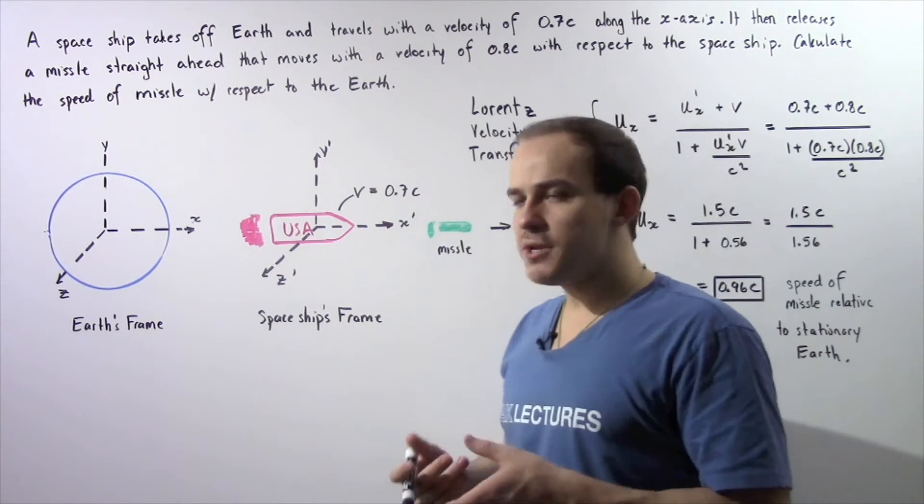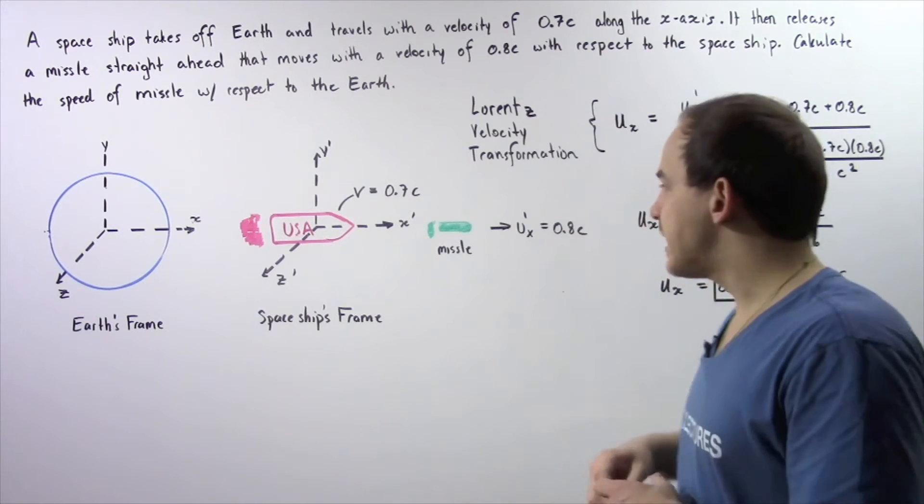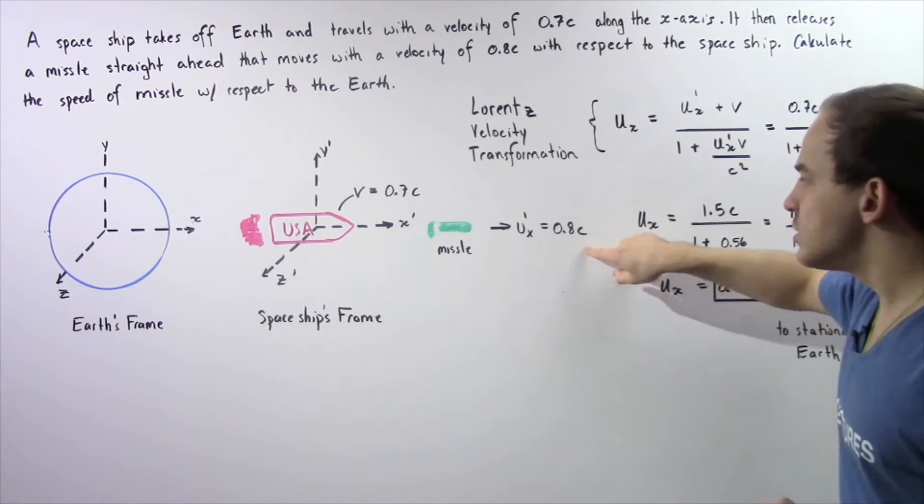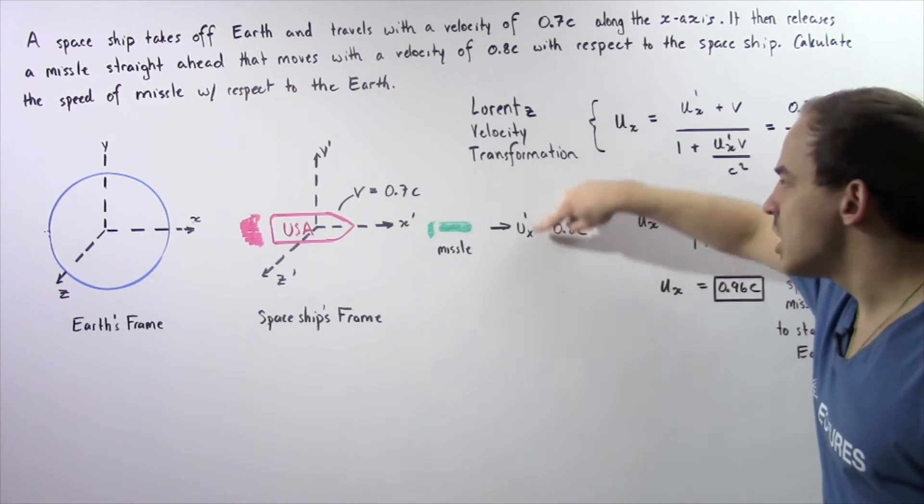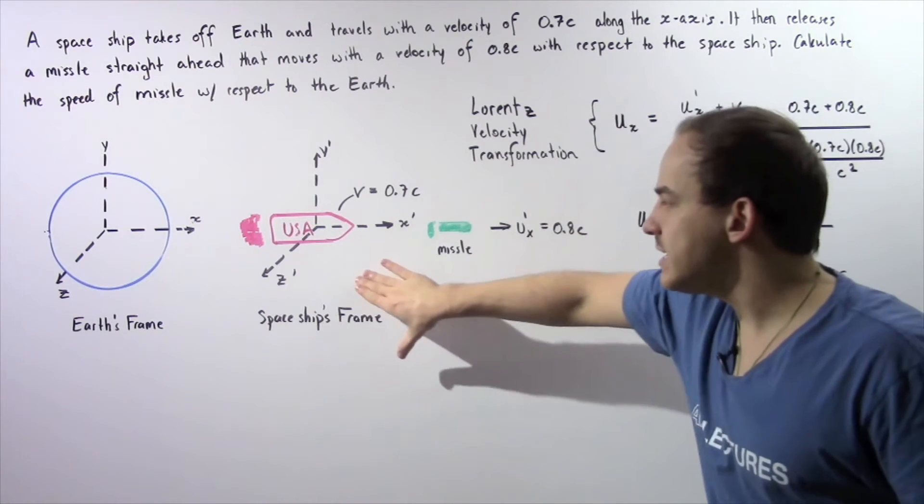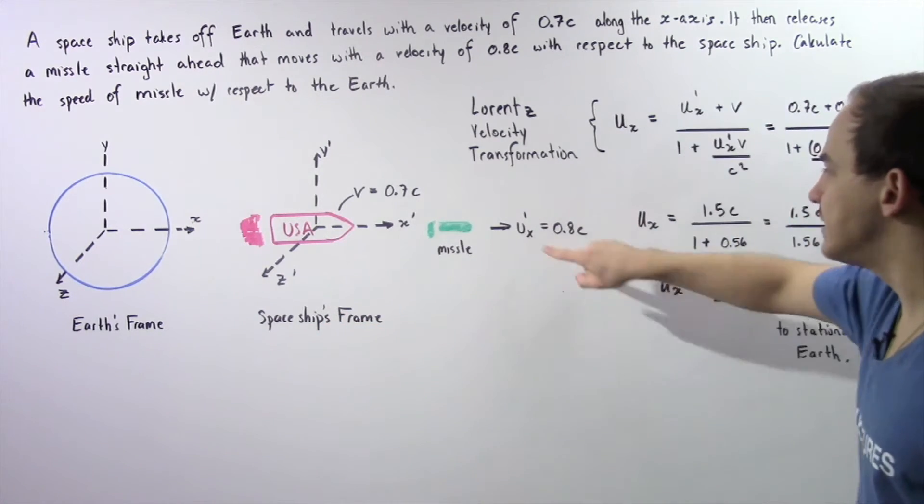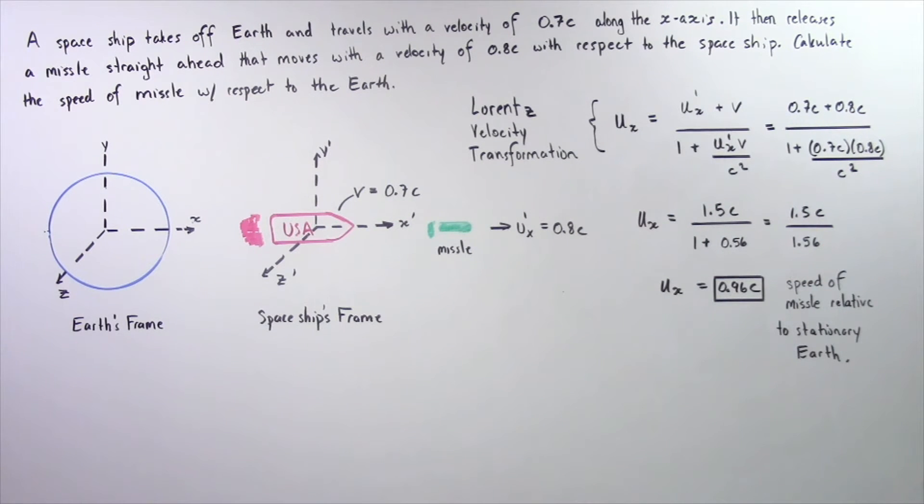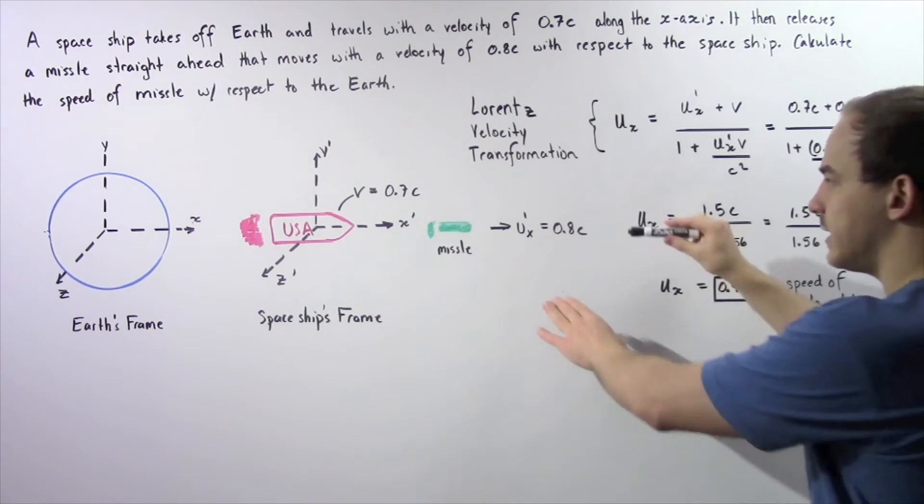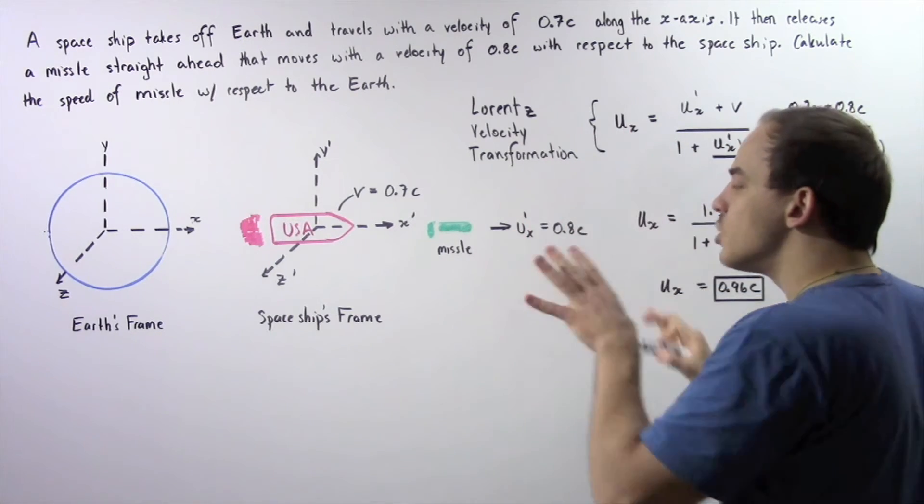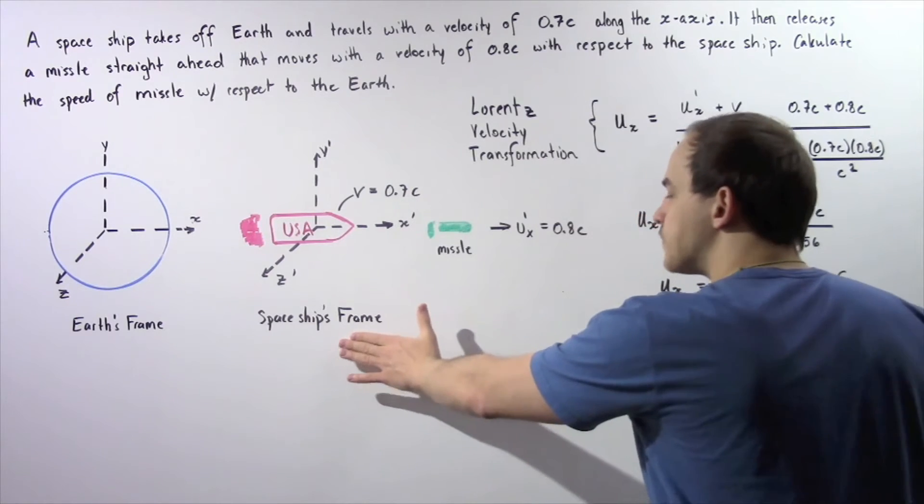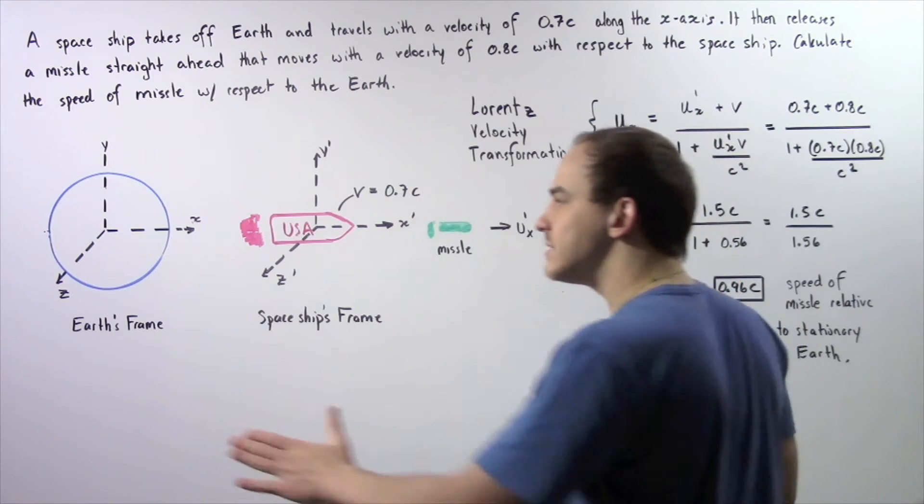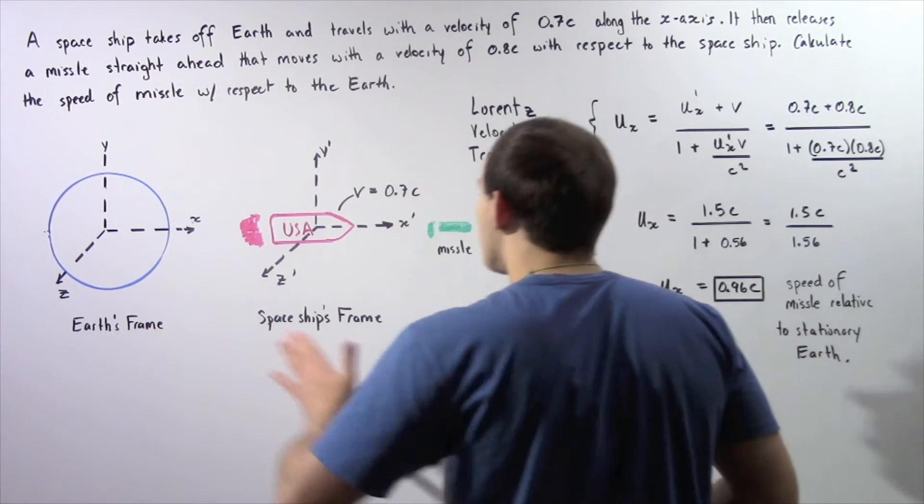The spaceship releases a missile that travels with velocity 0.8c, given by u prime x. The prime means we're dealing with the spaceship's frame of reference, and the x means the missile is traveling in the positive direction along the x-axis. This is the velocity of the missile with respect to the spaceship's reference frame. We want to find the velocity of the missile with respect to the stationary frame, the Earth's frame.